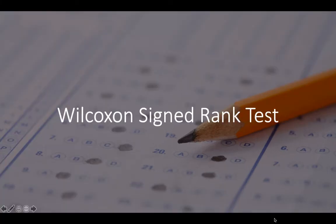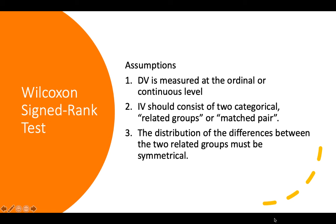The Wilcoxon signed-rank test also has assumptions, but they are very robust. The DV should be measured at the ordinal or continuous level. The IV should consist of two categorical related groups, or a matched pair — just like our paired sample T. The distribution of the differences between the two related groups must be symmetrical, though not necessarily normal.